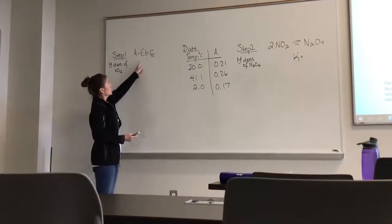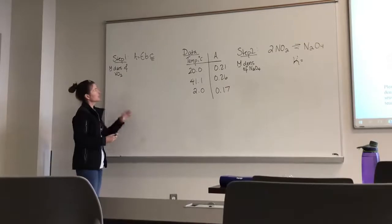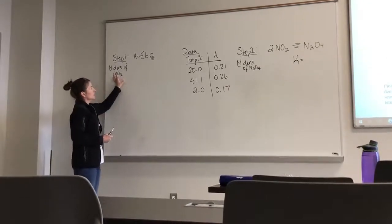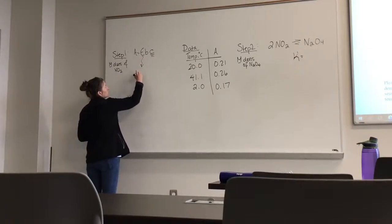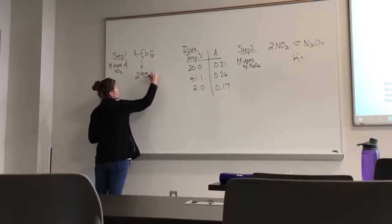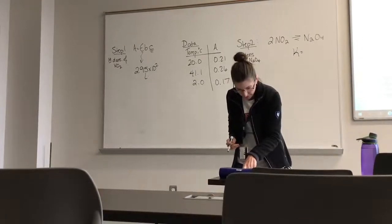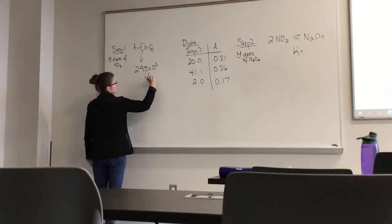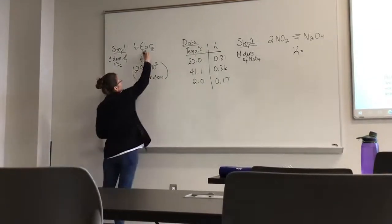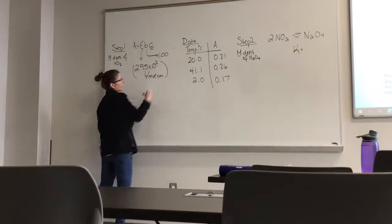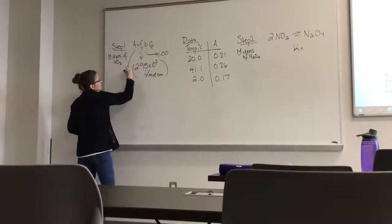To do that, we will use absorbance is equal to epsilon, which is molar absorptivity, times B, which is the path length of the cell, times C, the concentration or the molar density. So for this, the lab tells us in the protocol what this epsilon is equal to, and it is equal to 2.95 times 10 to the second liters per mole times centimeters. So that is your epsilon. That came directly from our protocol. We know that B is equal to 1 because that's the path length, which is roughly 1 centimeter.